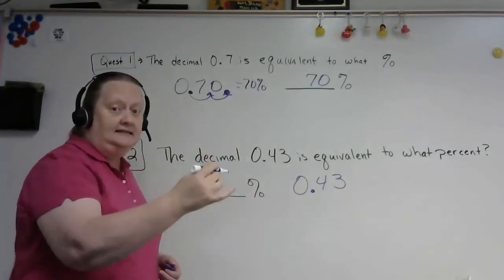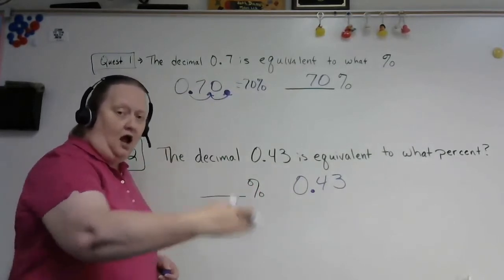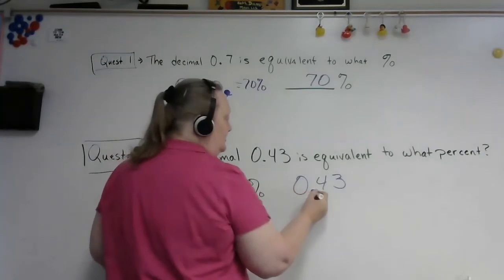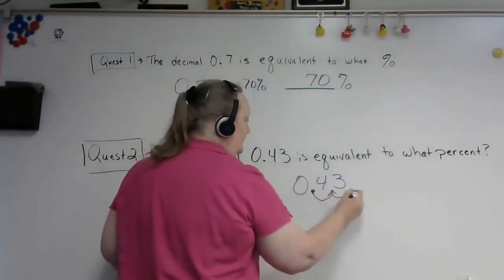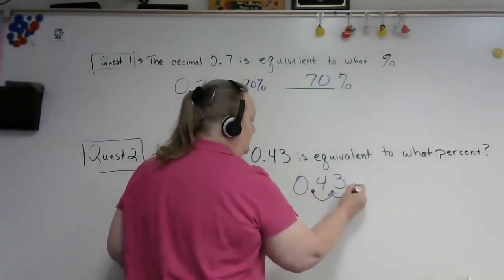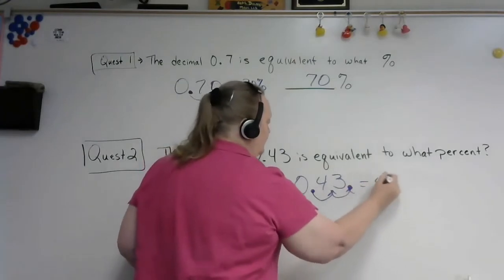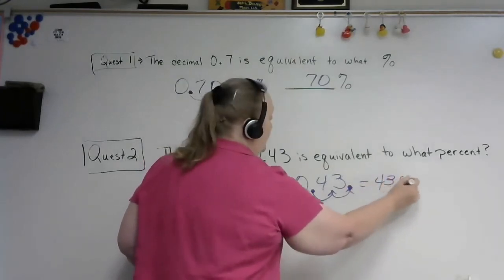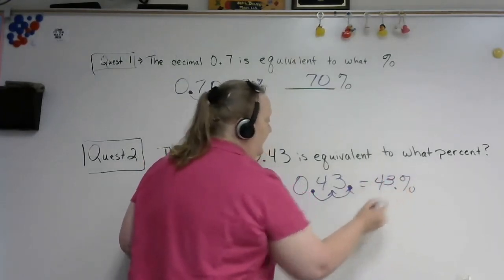Move it two places, two decimal places to the right. One, two. That means the decimal place ends up here, so that's 43% with the decimal there.